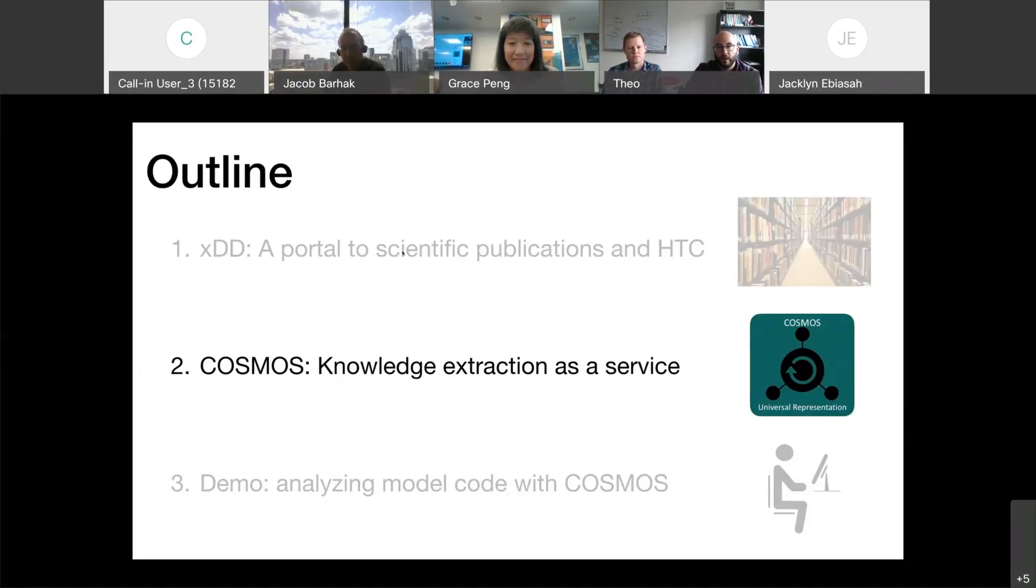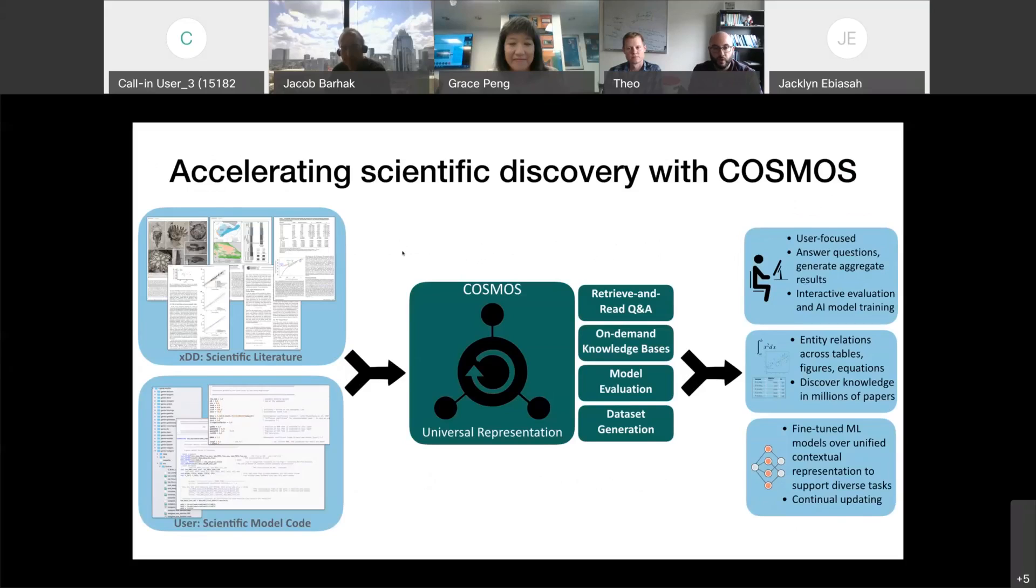The goal of Cosmos is to consume publications and other types of unstructured data, scientific model code, and be able to offer easy to deploy and readily available services that can help domain scientists extract knowledge and retrieve and read information about scientific phenomena.